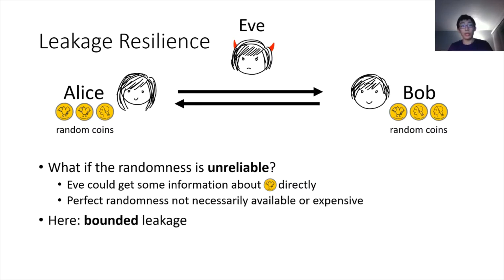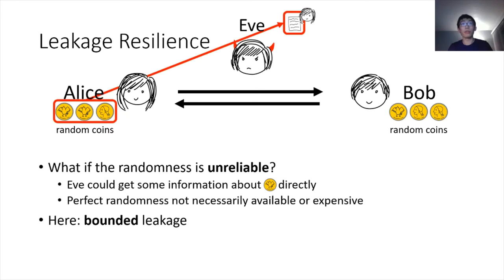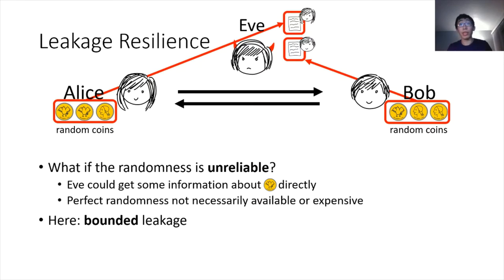Here, we'll be considering the bounded leakage setting, where Eve only gets a limited amount of information about Alice and Bob's states. For instance, Eve will be looking at all of Alice's coins, produce a small digest, and do the same for Bob. In general, we want security to hold even if Eve is given that leakage.